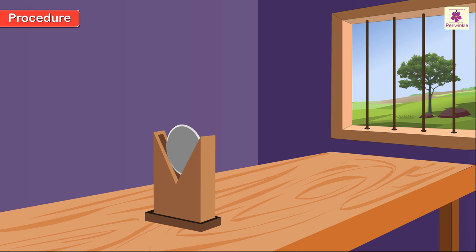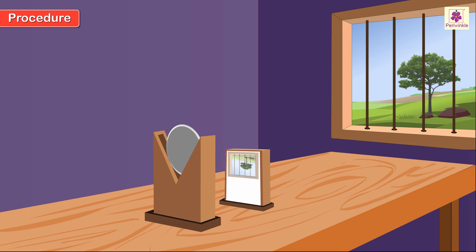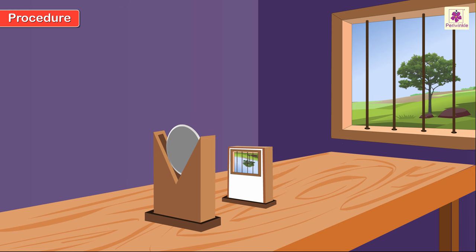Step 3: Place a screen fixed to a stand on the table so that the planes of the screen and the mirror lie parallel to each other. Step 4: Slowly move the screen to and fro so that the distance between it and the concave mirror either increases or decreases, till you obtain a sharp inverted image of the object on the screen.